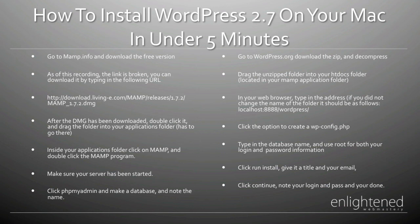All you need to do next is go to WordPress.org, download the zip and decompress the file. Then drag the unzipped folder into your htdocs folder, which is located in your MAMP application folder. In your web browser, type in the address. If you didn't change the name of anything, it should be localhost:8888/wordpress/.